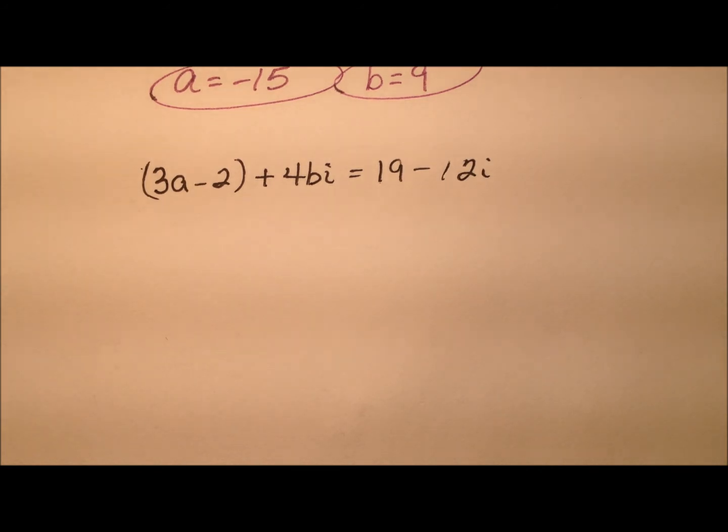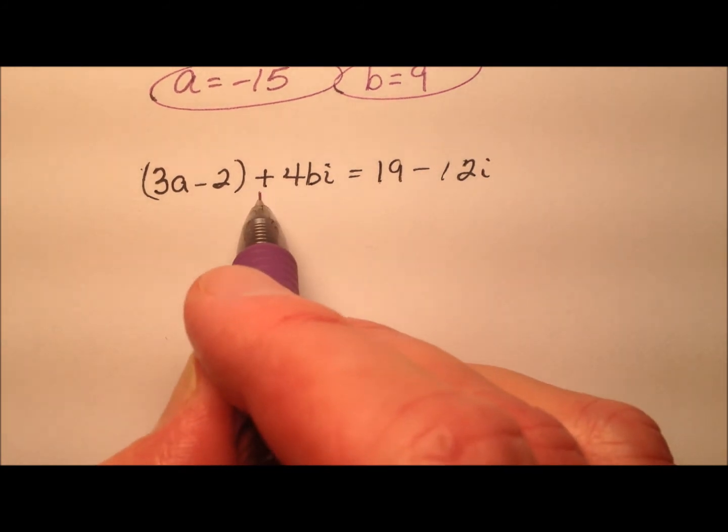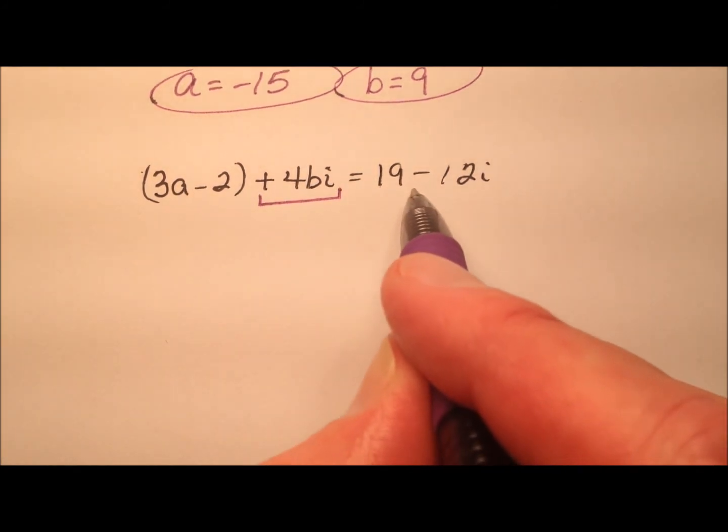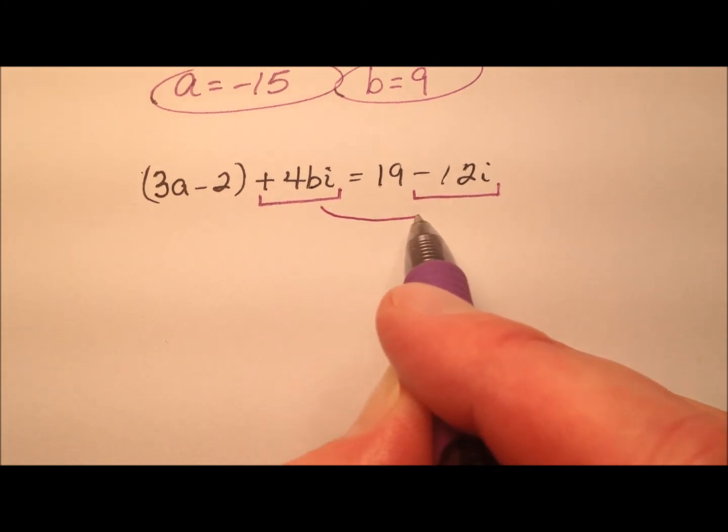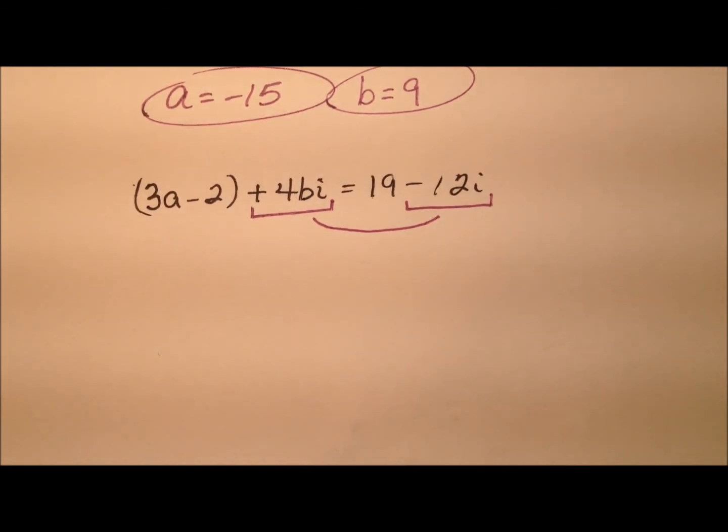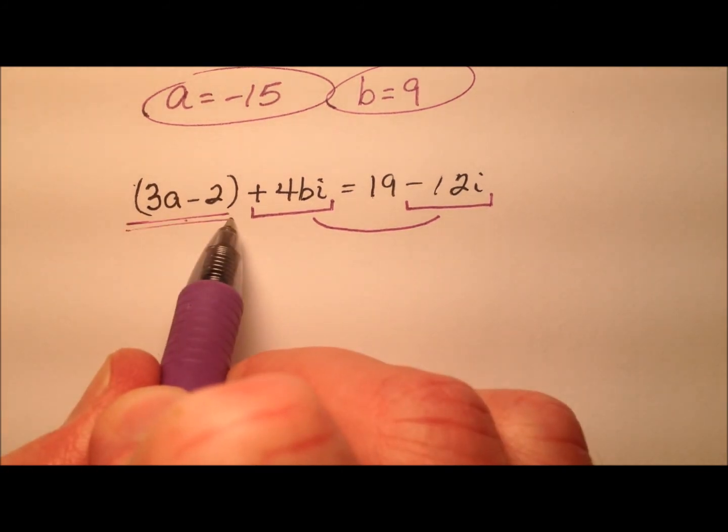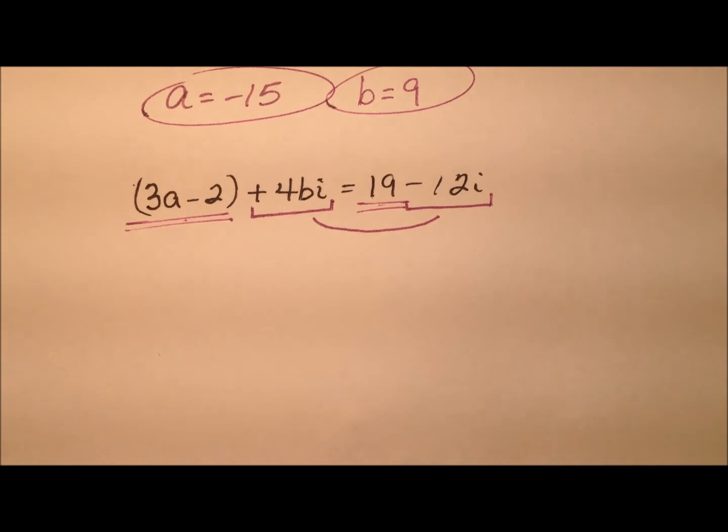So anything that has an i is going to be considered an imaginary part. So that's a plus 4bi and a minus 12i. Those are the imaginary parts. So anything without the i will be the real part. And that'll be my 3a minus 2 and my 19.